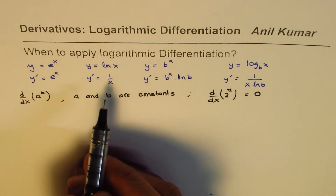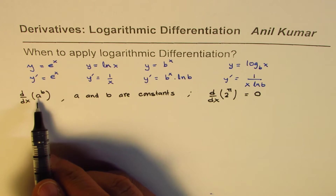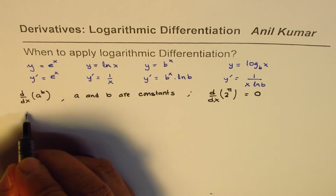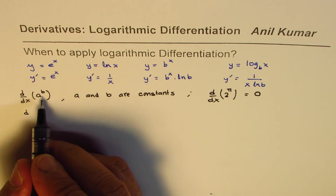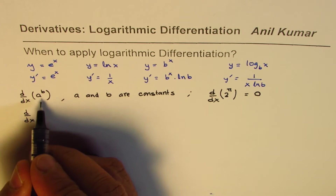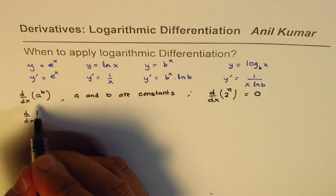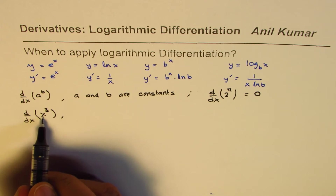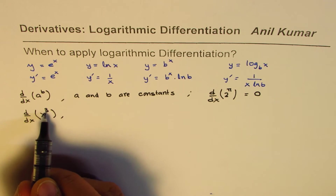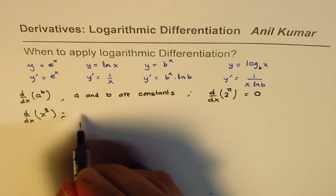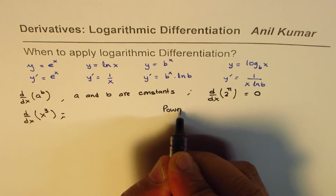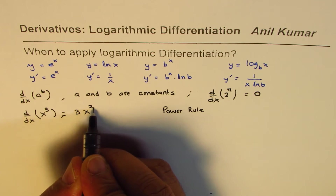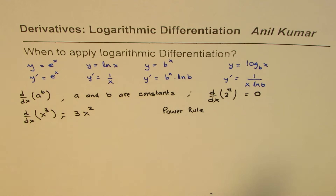Now let me take another example where we have an exponent and a base that are both constant. If I change the situation and make one of them a variable, we could have something like x to the power of 3, or x cubed. In this case x is a variable and 3 is a constant, so we apply the power rule. The derivative is 3x to the power of 2. Here also we do not apply logarithmic differentiation.